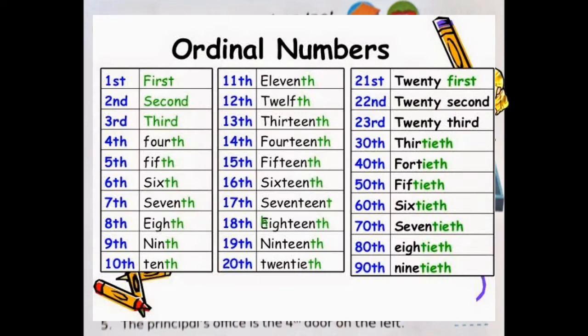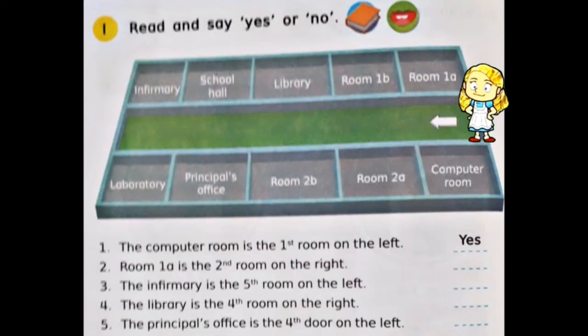Contohnya: first artinya pertama, second artinya kedua, third artinya ketiga, fourth artinya keempat, dan seterusnya. Seperti yang ada di pernyataan nomor 1 sampai 10: nomor satu ada 'the first room' artinya ruangan pertama, nomor dua ada 'the second room' artinya ruangan kedua, dan 'the fifth room' artinya ruangan kelima, dan sebagainya.